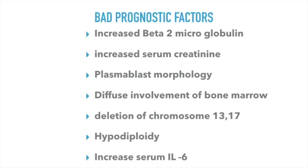The bad prognostic factors you should know — and which can be easily asked in exams — are: increased beta-2 microglobulin, increased serum creatinine, plasmablastic morphology, diffuse involvement of bone marrow, deletion of chromosome 13 and 17, hyperdiploidy, and increased serum interleukin-6.